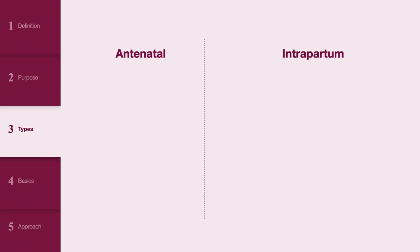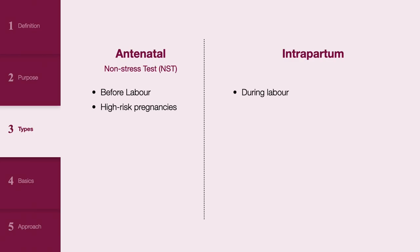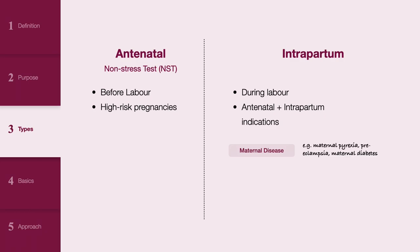There are two main types of CTGs: an antenatal CTG and intrapartum CTGs. An antenatal CTG, also known as a non-stress test, is performed before labor to monitor high-risk pregnancies and will not be covered in this video. An intrapartum CTG is used during labor to continuously assess the fetal response to uterine contractions. Indications include maternal disease such as maternal pyrexia, preeclampsia, and maternal diabetes, as well as fetal indications such as multiple pregnancy and suspected fetal distress.